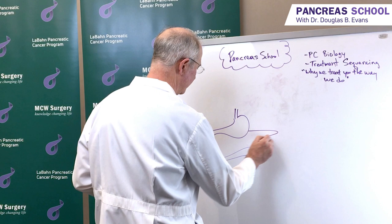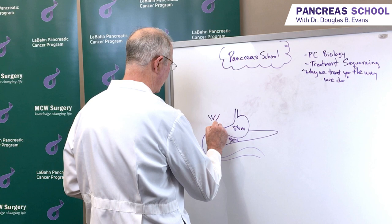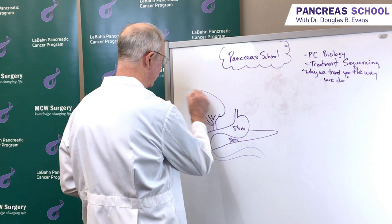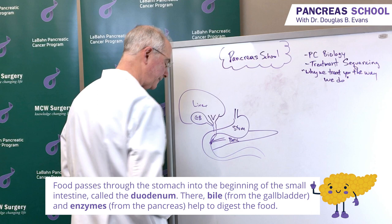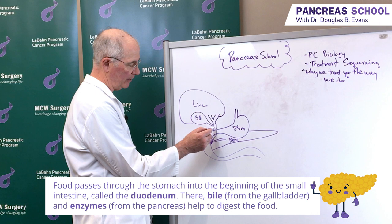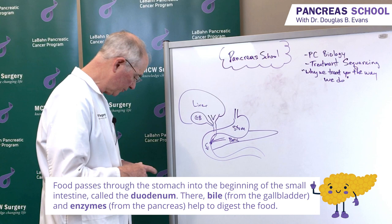The pancreas is put in a tricky location. Here is the stomach; the pancreas is sitting in here behind the stomach. We'll give our patient a gallbladder. The liver is here, the gallbladder is here, the bile duct comes down, merges with the pancreatic duct, and ends in the ampulla. So when you eat, digestive enzymes from the pancreas and from the bile and gallbladder are squirted out into the first part of the small intestine called the duodenum to aid in the digestion of food.